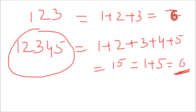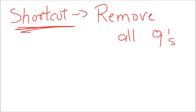Now moving on to the shortcuts to get the digital root. Because when you are given a larger number — up to 15 digits — you won't want to add all those numbers, as that would take quite a while. So there are shortcuts to get the digital sum or digital root. The shortcut is: remove all the nines from the number whose digital root you need to calculate. Let me explain why.